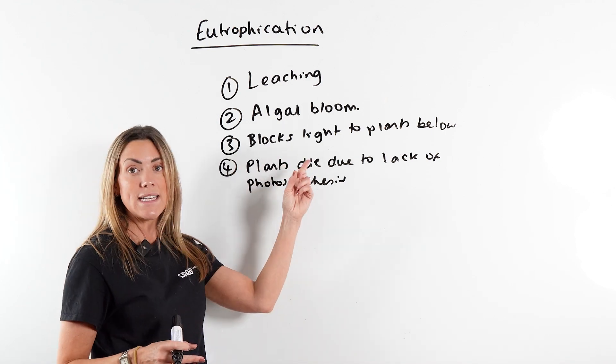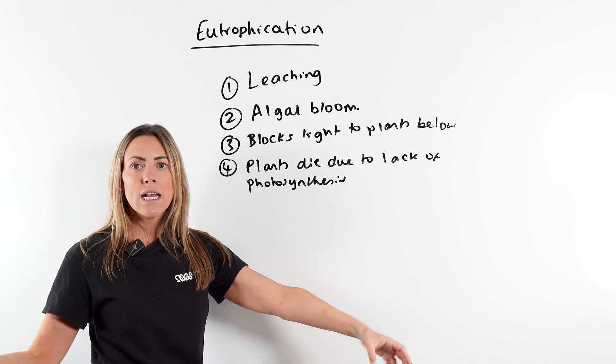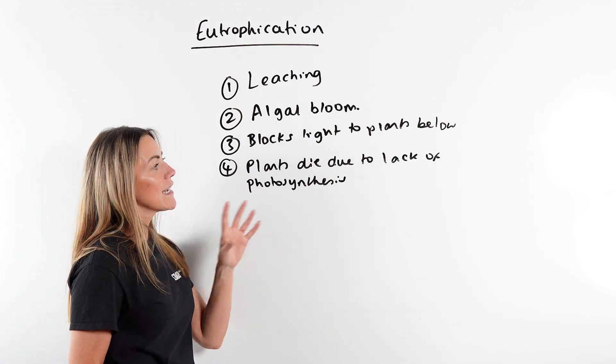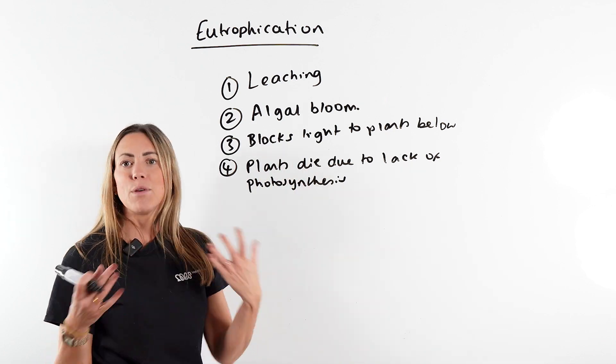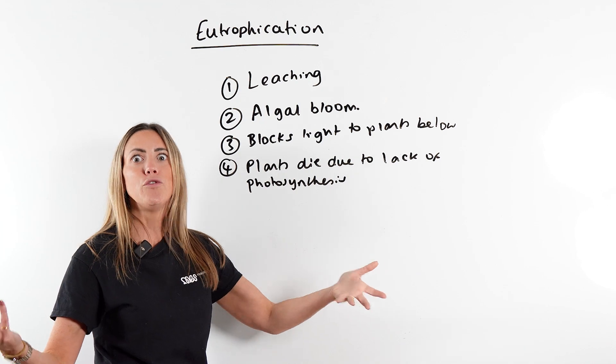You could also say algae die. The algae might start to die as well because there are so many algae plants that they're in competition, right? So you can get death of plants and death of algae, but you're going to have lots of dead plants in this pond or lake.